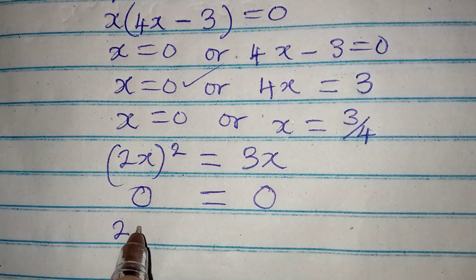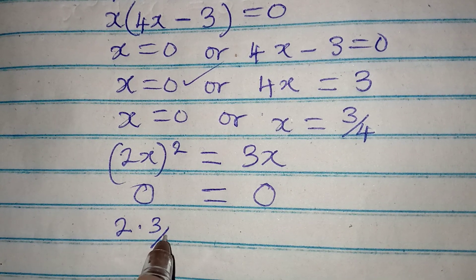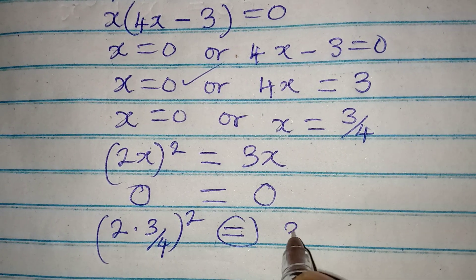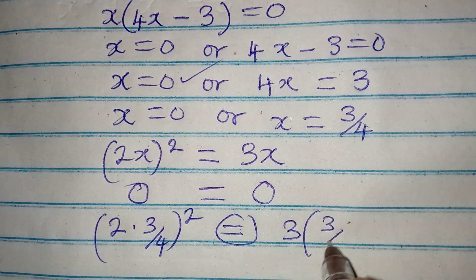We'll be having (2 × 3/4)² - will this be equal to 3 multiplied by 3 over 4? Because x is now 3 over 4.